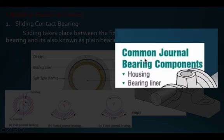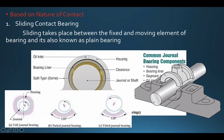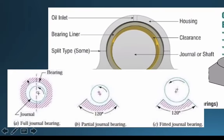Sliding contact bearings are commonly known as journal bearings — when I say journal bearing, I mean sliding contact bearing. Journal bearings are further classified into three categories based on the bearing housing: full journal bearing, which provides 360-degree support around the rotating shaft; partial journal bearing, where support is partial; and fitted journal bearing, where the diameter of the shaft is larger than the diameter of the bearing, unlike the partial case where the shaft diameter is smaller.